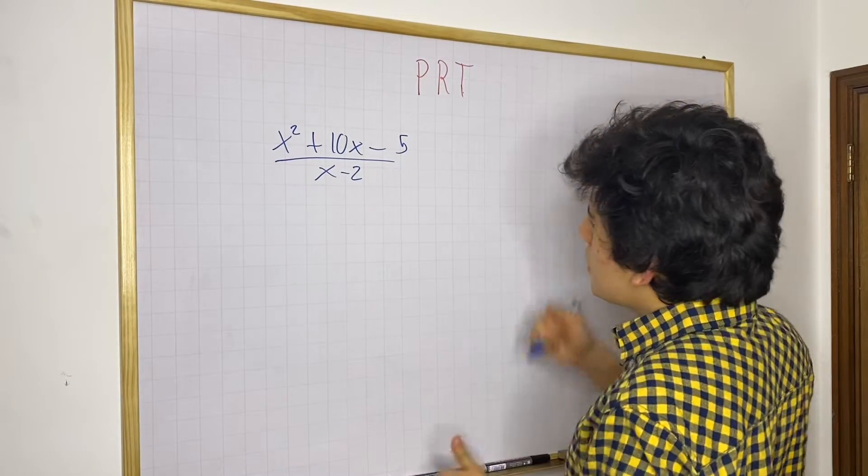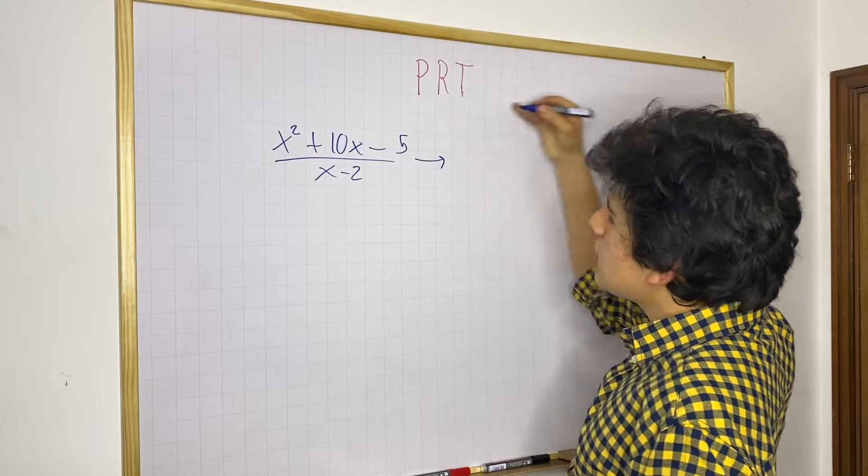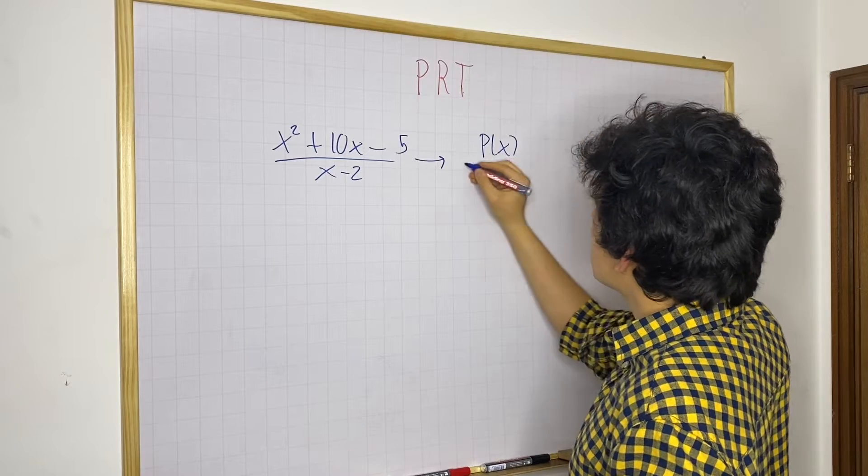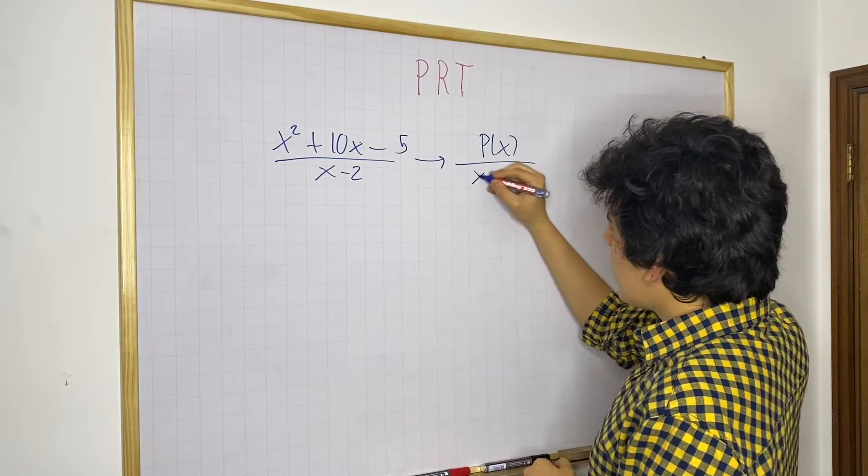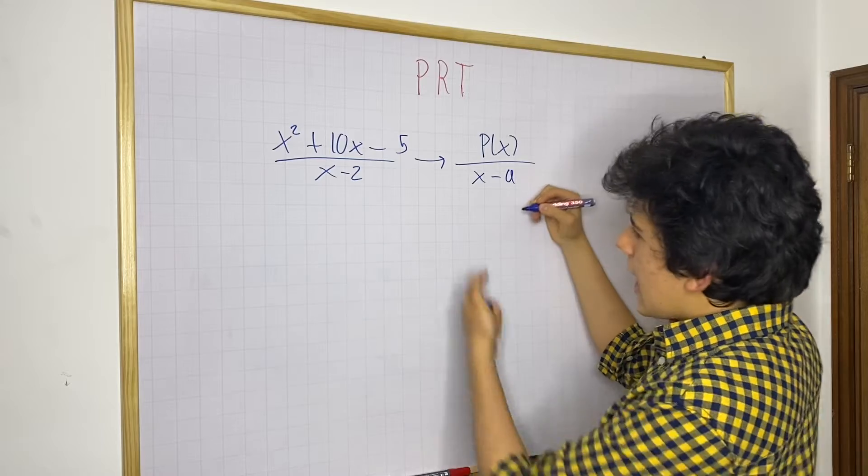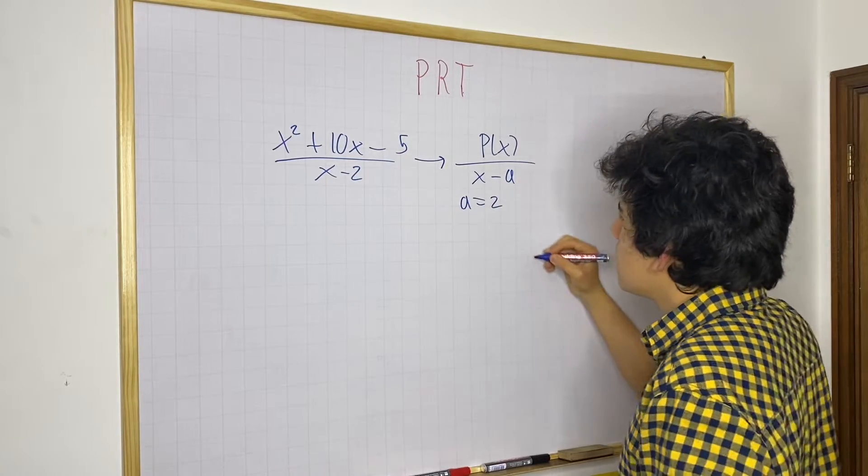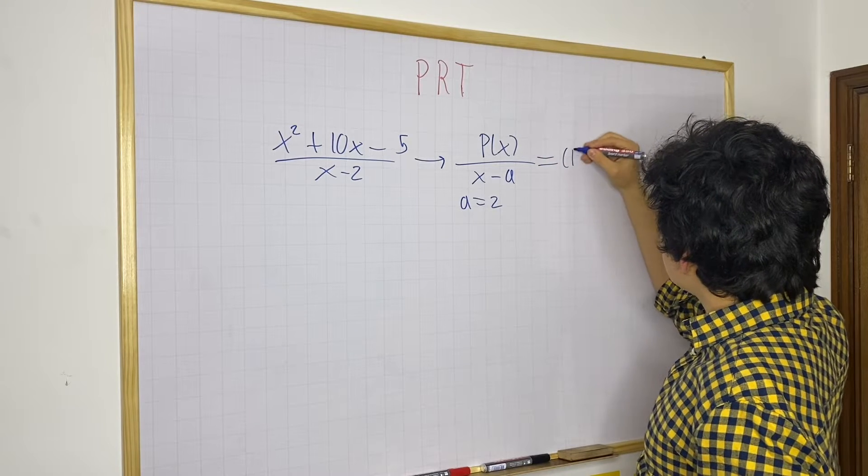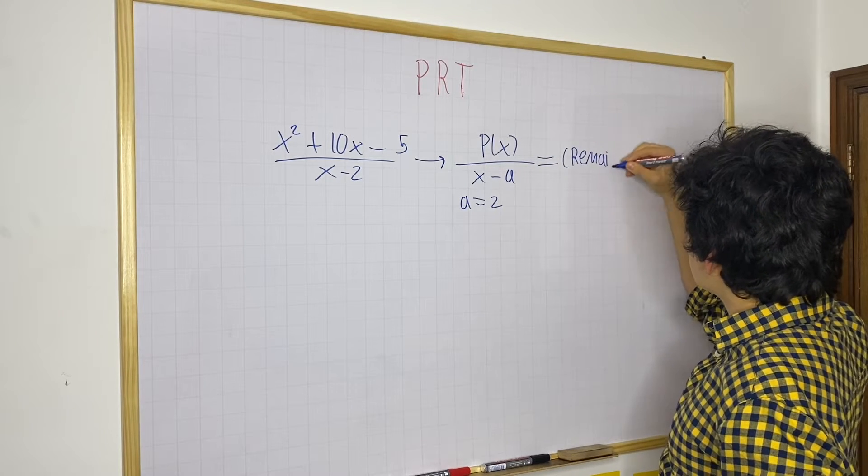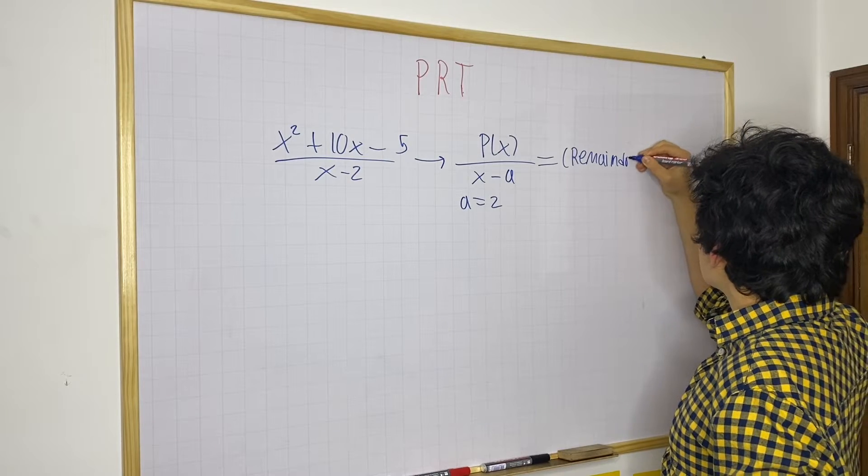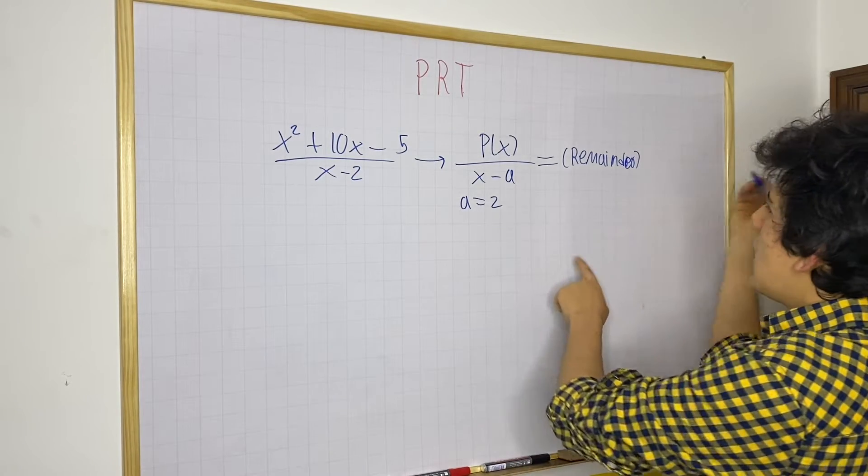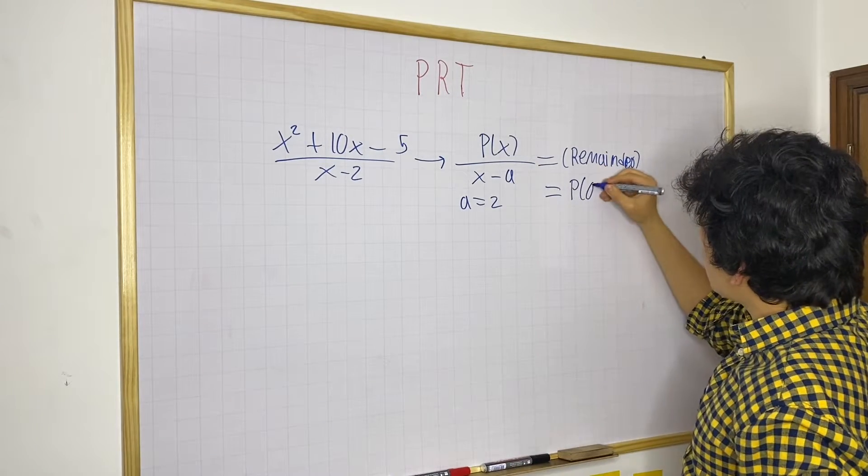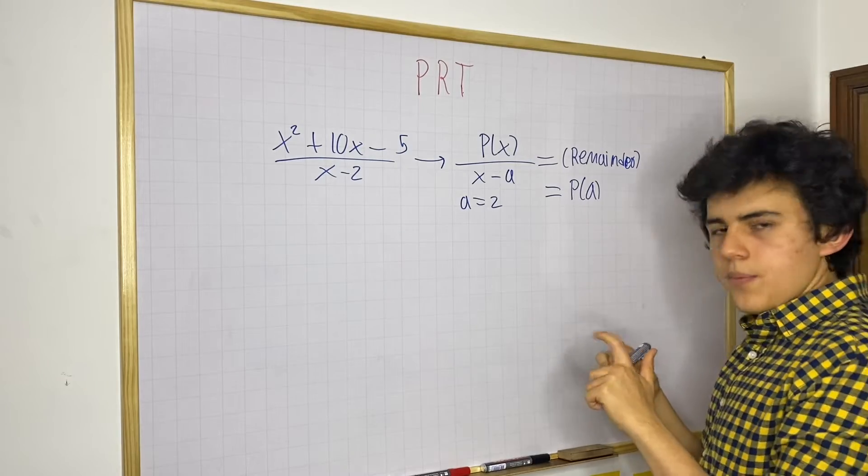So in this case, this theorem states that for this polynomial that we're going to call p of x, that is being divided by x minus a, a in this case being equal to 2, the remainder is going to be equal to the polynomial evaluated at a. It's pretty simple.